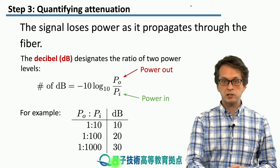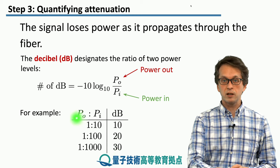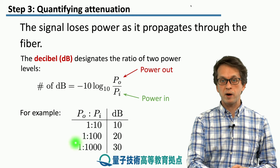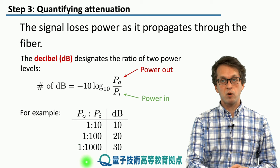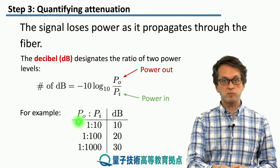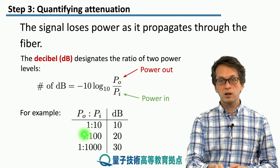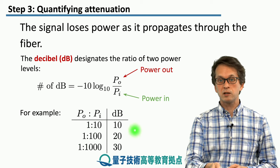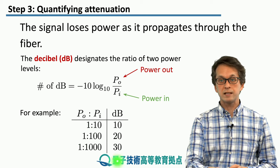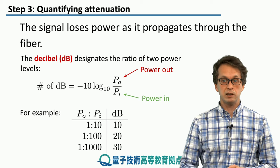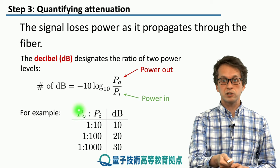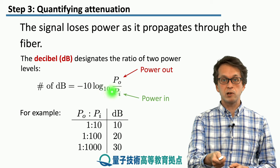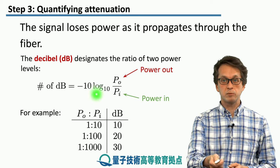So you can see that the ratio of power out over power in is getting smaller by an order of magnitude each time, whereas the increase in decibels is just linear. This is due to the definition in terms of the logarithm for decibels.